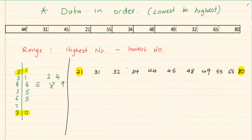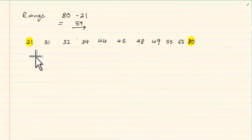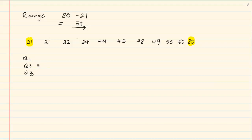After you have done the range, the next measures of dispersion are Q1 and Q3. In order to do this, you need to know how to get your median. The median is the middle. If you count our data we have 11 values. Now when we are doing Q1, Q2 and Q3 — Q2 is what you call the median.